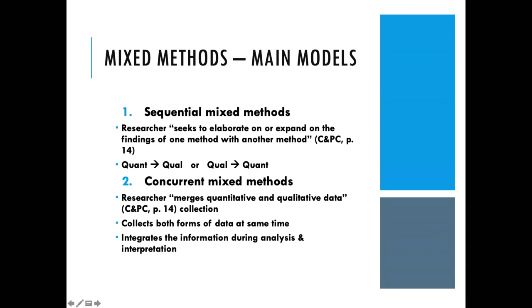Some of the main models, coming mainly from a Cresswell perspective: sequential mixed methods is where you collect one strand of research — the quantitative, for example — and then the second strand, the qualitative, or vice versa, in sequence one after the other. It seeks to elaborate or expand upon the findings from one method to the other.